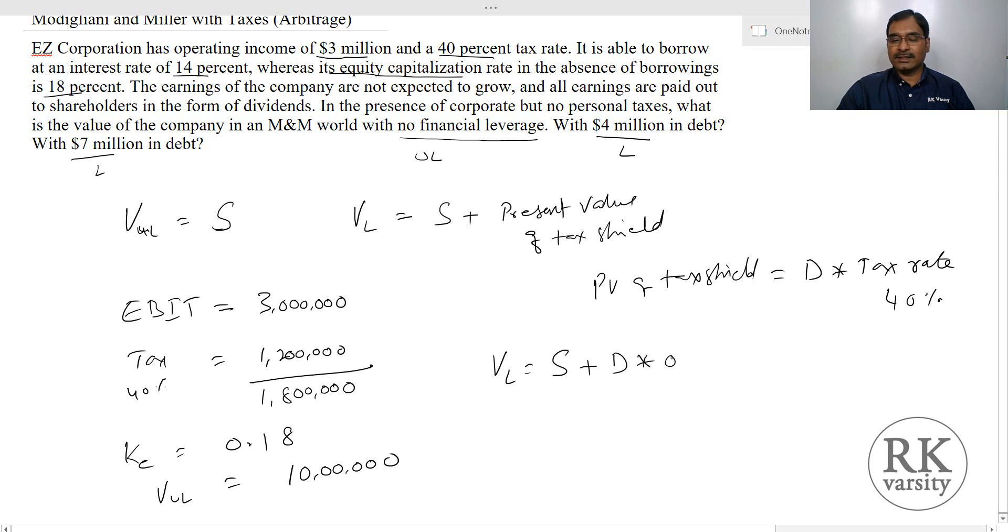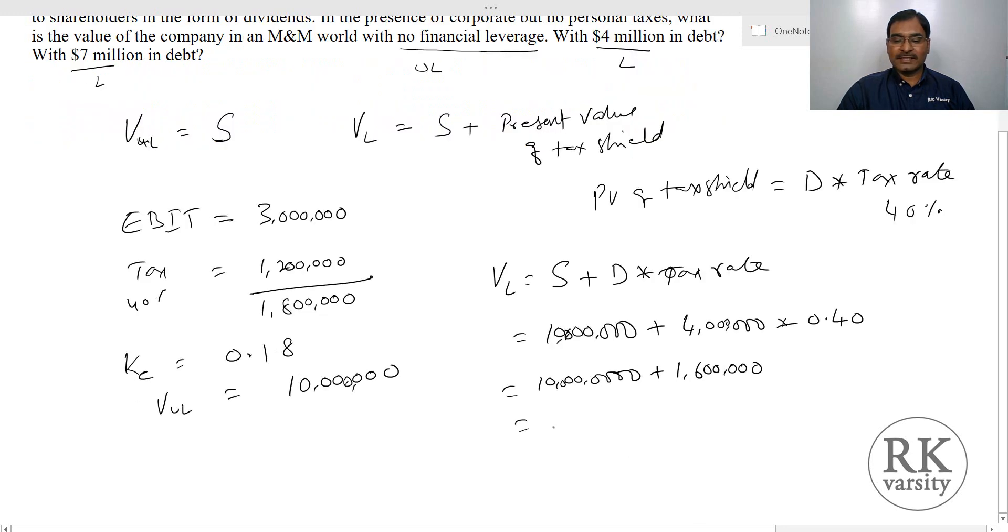This equals $10 million plus, in case of debt this is $4 million times tax rate 40%, so this equals $10 million plus $1,600,000, which equals $11,600,000.